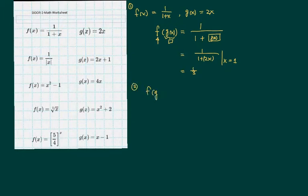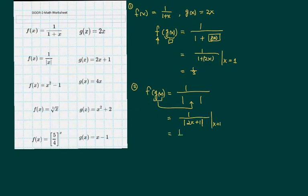f of g of x for number 2, do it with me. It's 1 over this form. Whatever you gave me gets plugged in there, so we have 1 over absolute value of 2x plus 1. We value that x is equal to 1, we have 1 over 3.